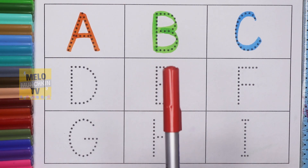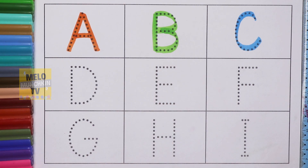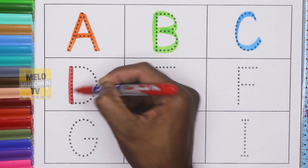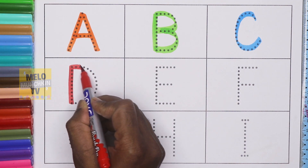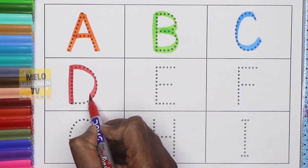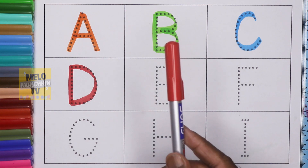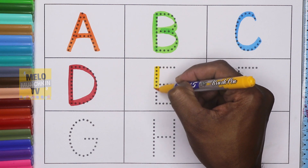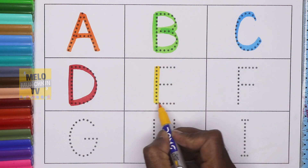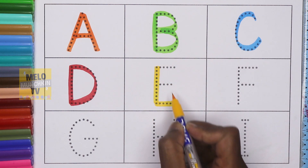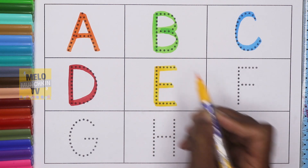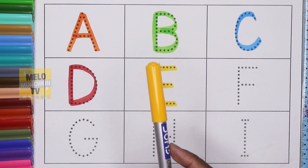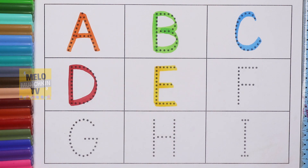Next I'll take red color to write letter D. D for dog. This is red color. Now I'll take yellow color to write letter E. E for elephant. This is yellow color.